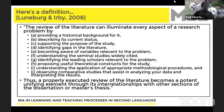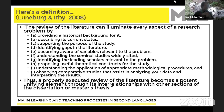An annotated bibliography is making a list of the articles and summarizing them — making summaries of the articles you plan to use. A lit review is not simply making lists of summaries.